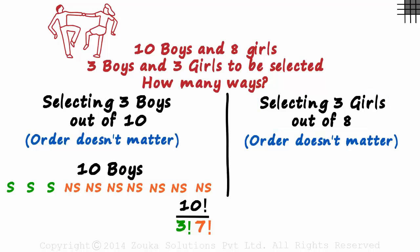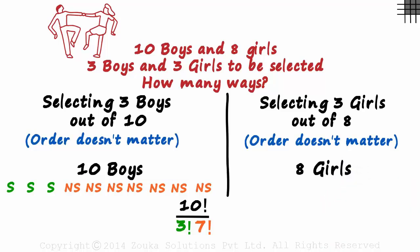There are 8 girls in all. Using this concept that we just learnt, can you find the number of ways in which we can select 3 girls out of the 8?